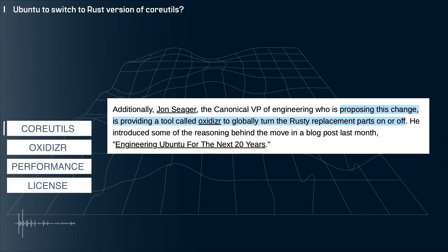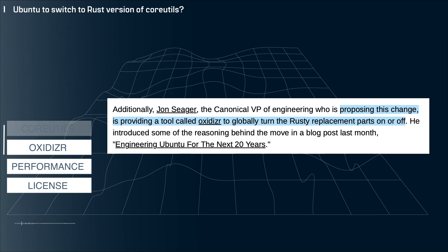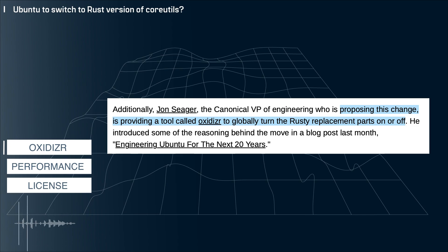One, the VP of engineering at Canonical, the company behind Ubuntu, is proposing to add a tool that would enable users to remove the Rust components and replace it with the traditional coreutils. Seems a little bit complicated to me, perhaps unnecessarily so, but I suppose having the option is a good thing.